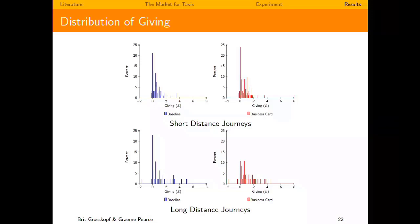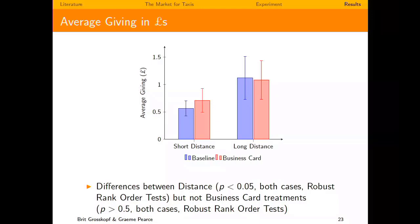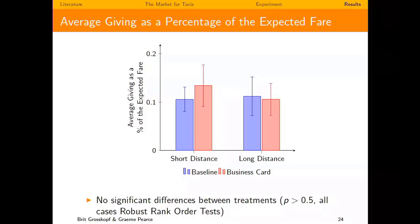There's a lot of other-regarding behavior found in the market. Looking at average giving: there's seemingly more in the long distance, but percentage-wise of the expected fare it's about the same. The two-distance design matters — if I'd shown you only one distance, you might think drivers give a little and that's it. But showing both distances demonstrates they give proportionally: a little in short journeys, proportionally more in long ones. That's much stronger evidence for other-regarding behavior.